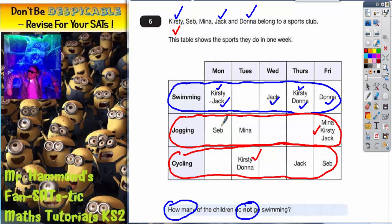Now let's check for Seb. Seb, is he on the jogging row? Yes, he is. Is he on the cycling row? Yes, he is. On a Friday. So Seb also does both.